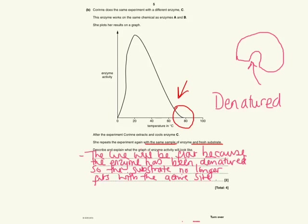The line will be flat—this is my description—because the enzyme has been denatured, so the substrate no longer fits with the active site. That part is my explanation, so I've included both parts of the question.